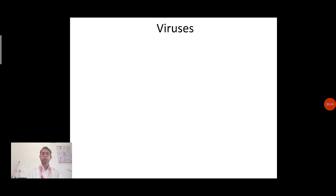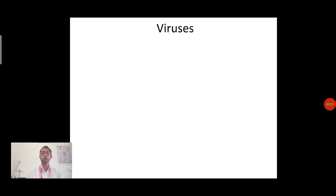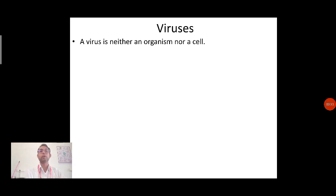Viruses are non-living structures, or we call them particles, present in nature. They become active only when they get a particular type of host. They are obligate parasites — non-living particles that get activated when they find a proper host. They are host-specific and are therefore known as obligate parasites.